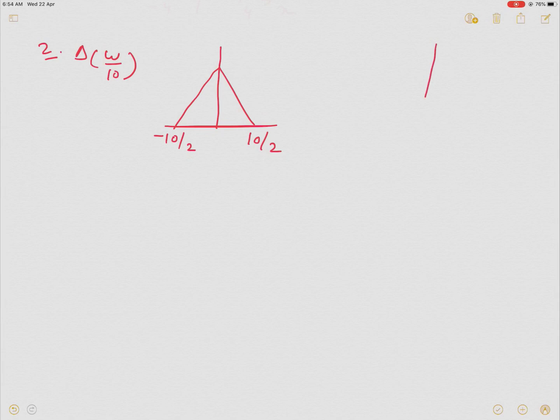Why? Because the original unit triangle function is from half to minus half centered at origin and its amplitude is 1. Again here also 1.